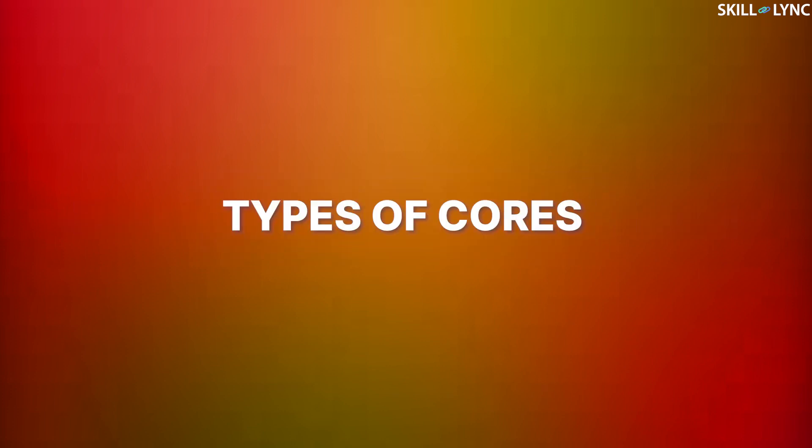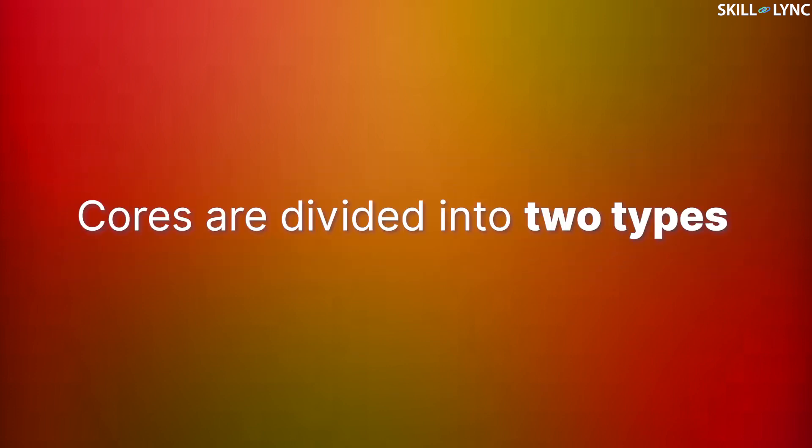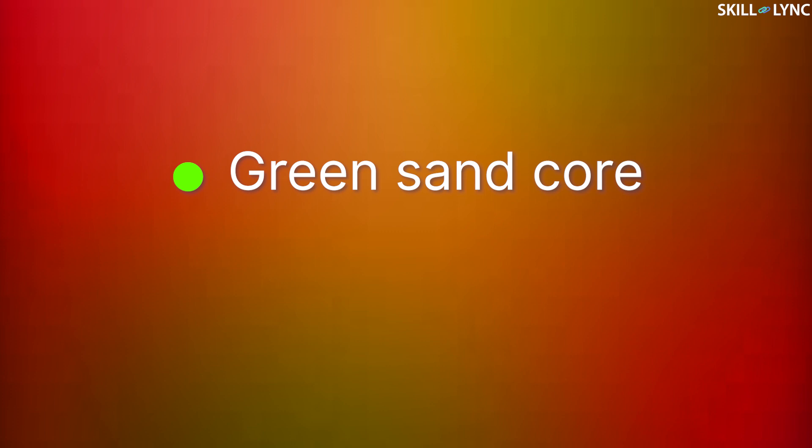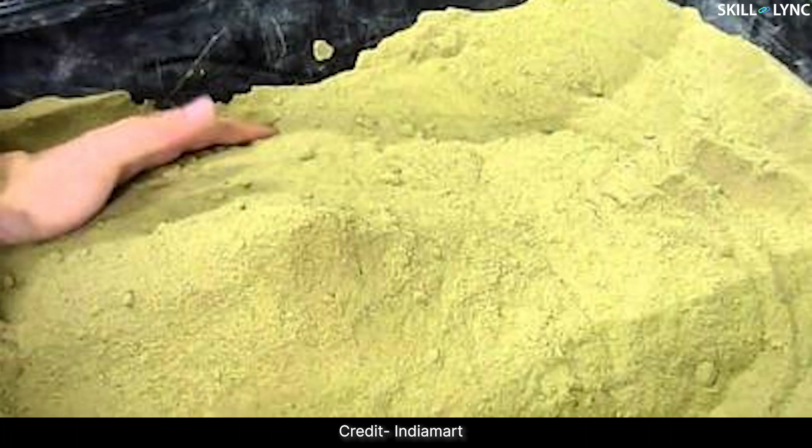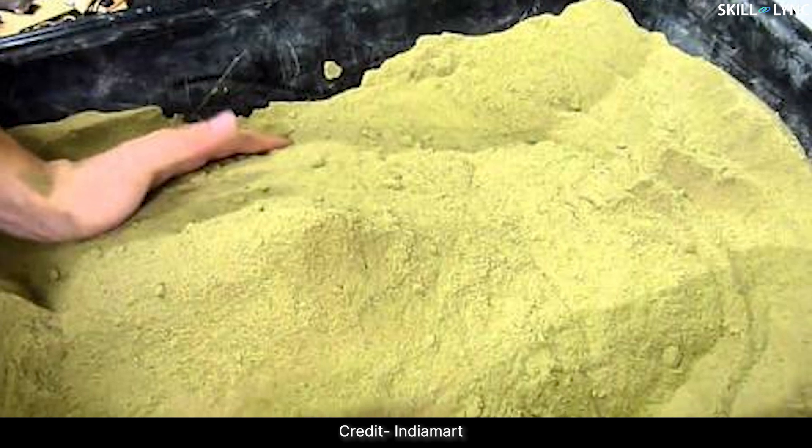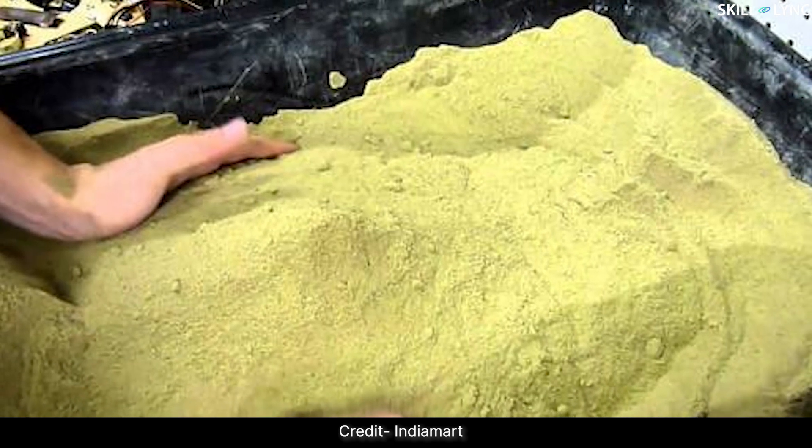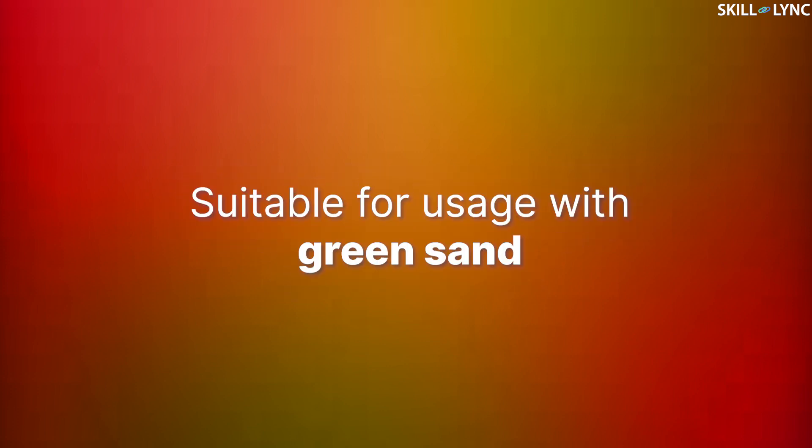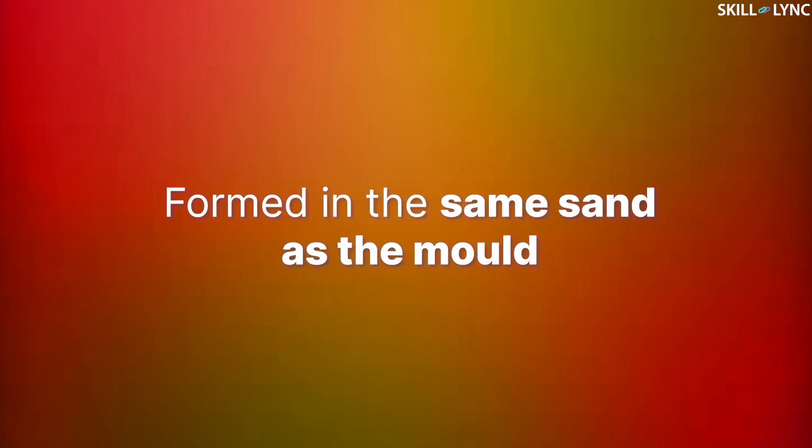Now let's move to our main topic, that is the types of cores. Cores are divided into two types: green sand core and dry sand core. Green sand core is a type of core which is manufactured from standard damp molding sand mixtures and a binder. This type of core contains moisture content and is very fragile. Green sand cores are designed such that it is suitable for usage with green sand. It is formed by the pattern in the same sand used for the mold.